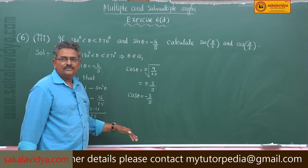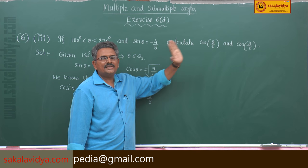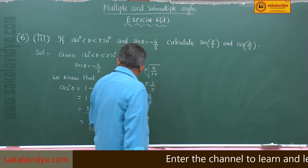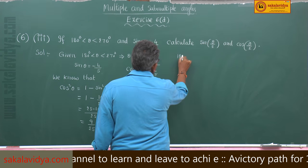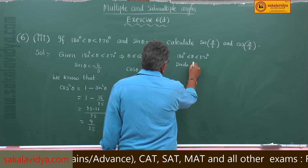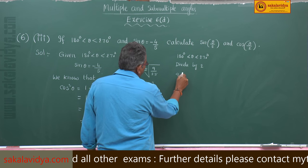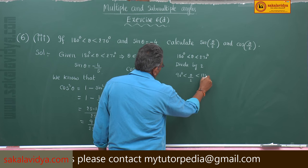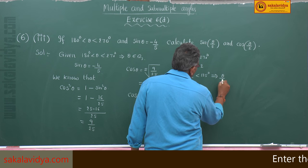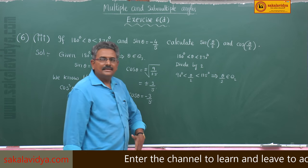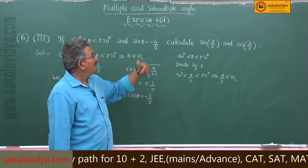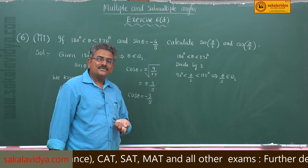Now we know cos θ = −3/5. We need to determine the quadrant in which θ/2 lies. Dividing 180° < θ < 270° by 2 gives 90° < θ/2 < 135°. That implies θ/2 belongs to the second quadrant. In the second quadrant, sin and cosec are positive while the rest are negative. So sin(θ/2) will be positive and cos(θ/2) will be negative.